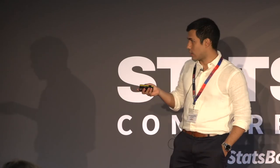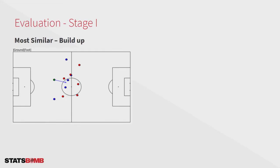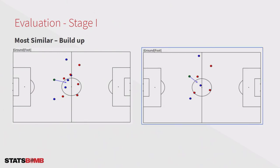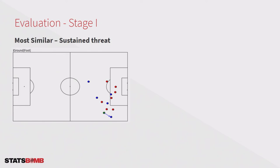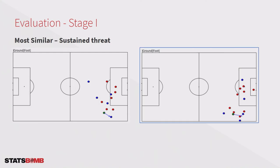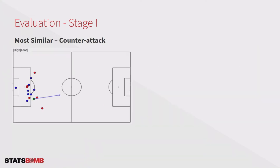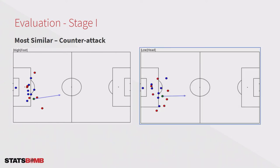Then I ask for a build-up action — a pass between the first line of defenders — and the embeddings show me the most similar play. For a sustained threat, a pass in the last part of the field, the embeddings return a similar action. And for a counter-attack where the blue team recovers the ball and starts an attack, the most similar action based on the embeddings is this one. It looks like the embeddings are placing similar actions closely together.